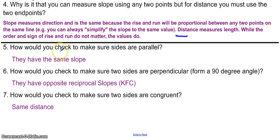So, how would you check to make sure sides are parallel? Well, sides that are parallel will have the same slope. That makes sense because they're going in the same direction. They've got that same level of steepness.